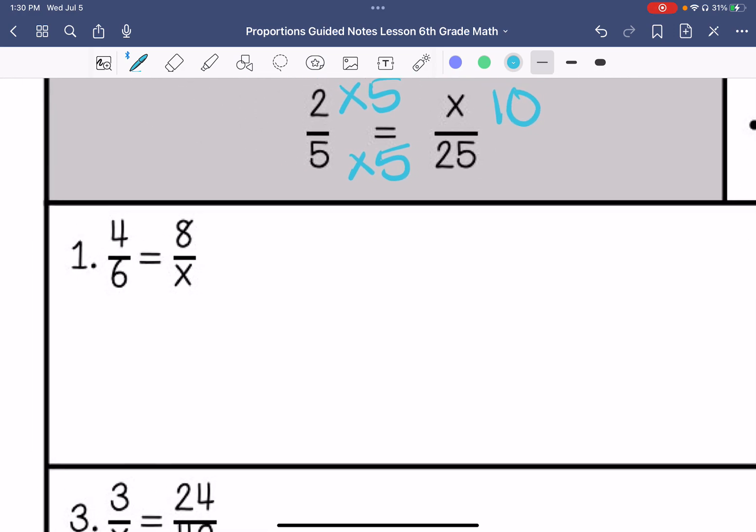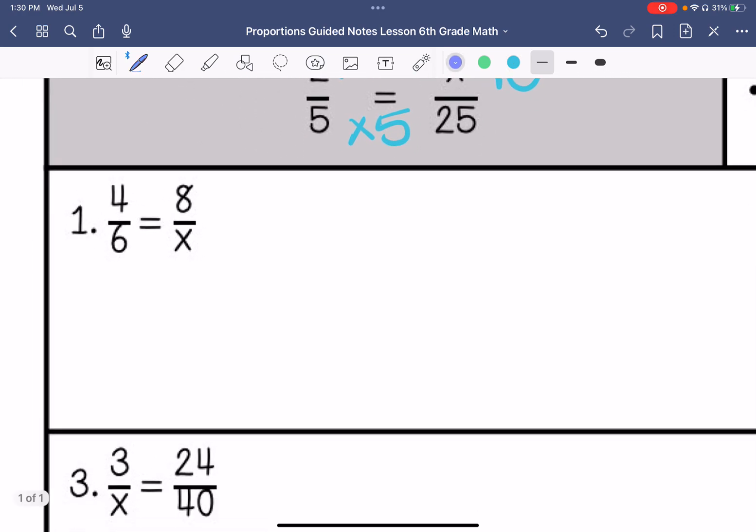All right, so for number 1, what times 4 is 8? 4 times 2 is 8, so 6 times 2 is 12. So x equals 12.